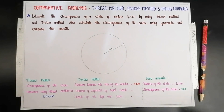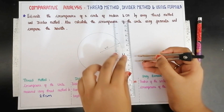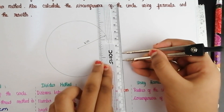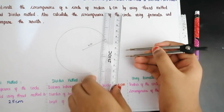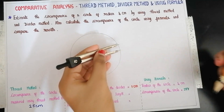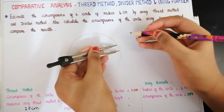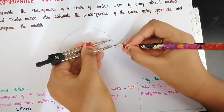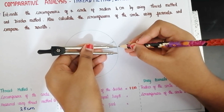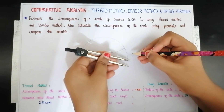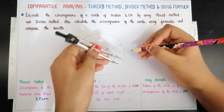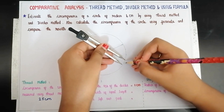Next we are going to measure the circumference of the circle using divider method. Take a divider and separate its two tips by a small distance, say 1 cm, with the help of a ruler. Place one tip of the divider at the beginning of the circle. Place the other tip of the divider on the curved path and put a mark at this point. Continue moving the divider forward till the entire circle is divided into segments of equal length.